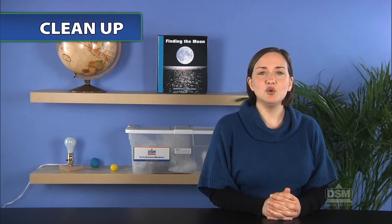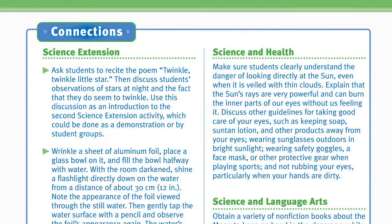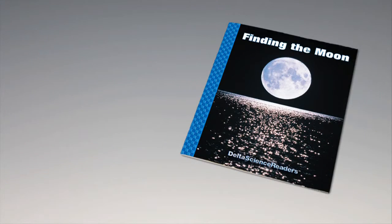Tell students that in the next activity, they are going to watch the moon change shape from one day to the next. To conclude the activity, remove the tape marks from the window and return the roll of tape to the kit. For science background, reinforcement activities, curriculum connections, and information about the Delta Science Reader, please consult your DSM teacher's guide.